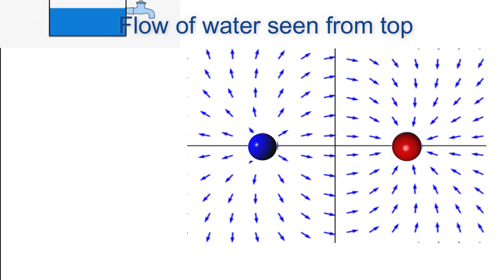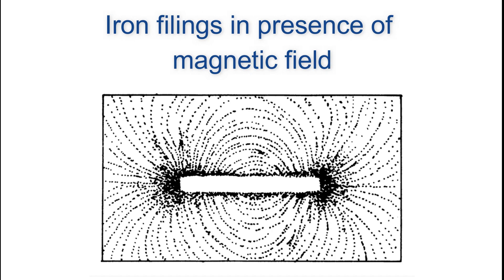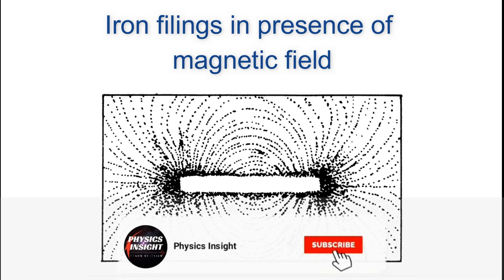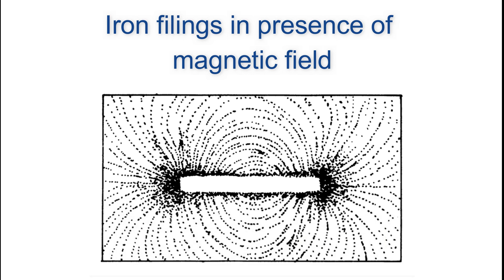We can also explain the vector field using the behavior of iron filings in presence of a magnetic field. Iron filings orient themselves with the magnetic field. The arrangement in which iron filings arrange themselves can be described as a vector field.